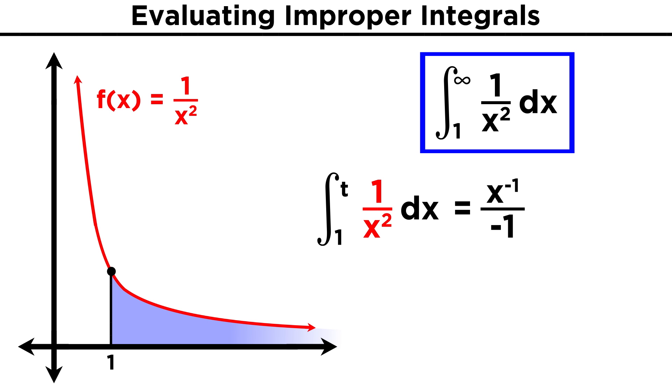X to the negative two will give us x to the negative one over negative one, which is negative one over x. Let's evaluate this over our selected interval, and we get negative one over t minus negative one over one. These two negative signs cancel to give us positive one, and switching the order, we can express this as one minus one over t.